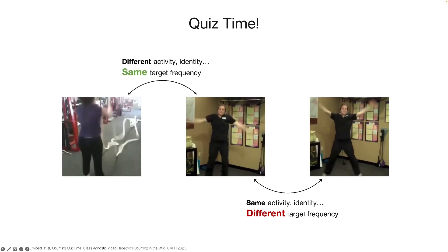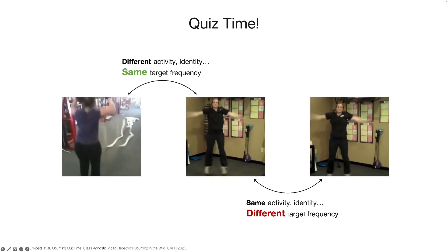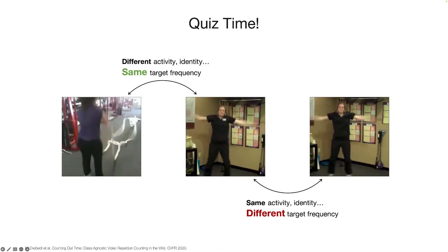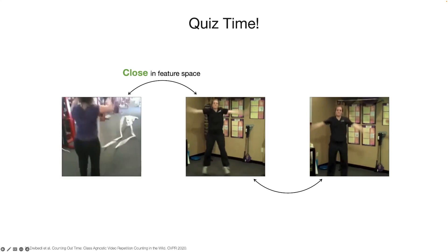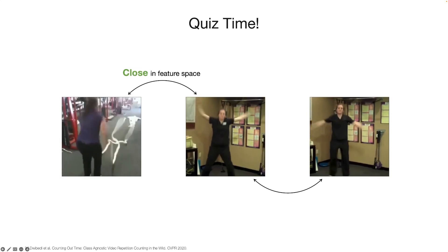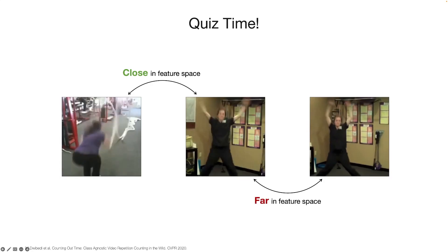In fact, although the first two videos have different activities and identities, the underlying action frequencies are actually the same. This indicates that in an ideal representation space, the first two should be close, while the last two should be far away in the feature space.